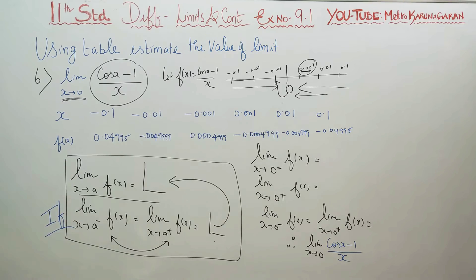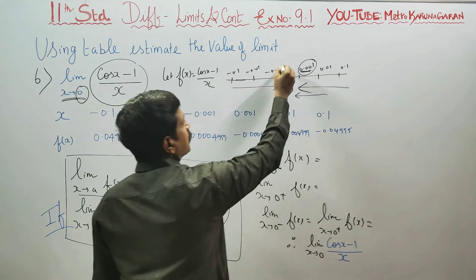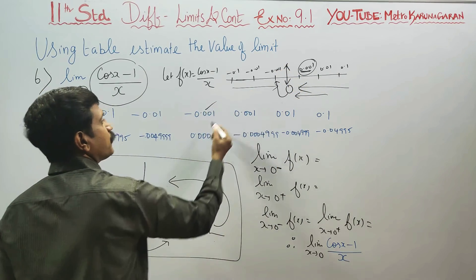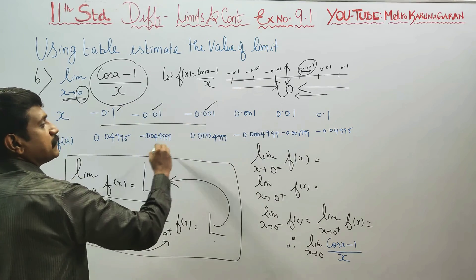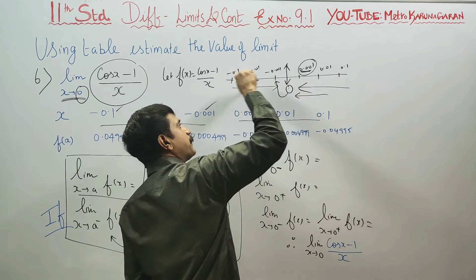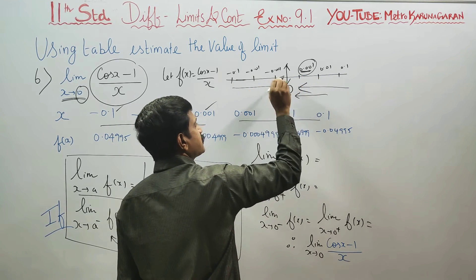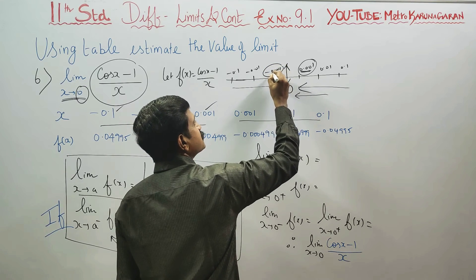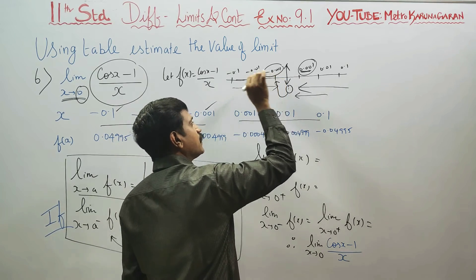Now, the middle value is 0. On one side we have minus 0.1, minus 0.01, minus 0.001. On the other side we have 0.001, 0.01, 0.1. These values are on the right hand side and left hand side of 0. We will approach 0 from both the left hand side and right hand side.